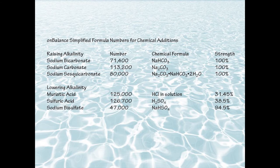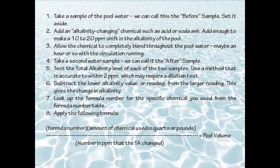After we have these pieces of information, we go to the formula and calculate what the pool volume is. We plug in the formula number and multiply that times the amount of chemical used in quarts or in pounds. After we have that number, we divide it by the change in alkalinity. The result of that formula will be the pool volume.